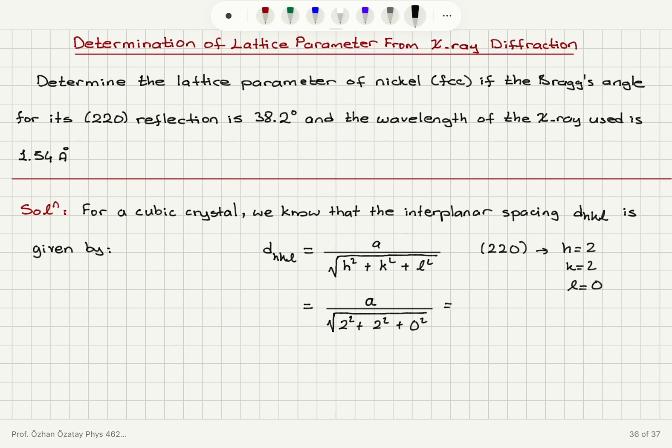So, this gives me A divided by 2 square root 2. It would be square root of 8, 4 plus 4 square root of 8, which is 2 square root 2. Now, if I recall the Bragg condition...